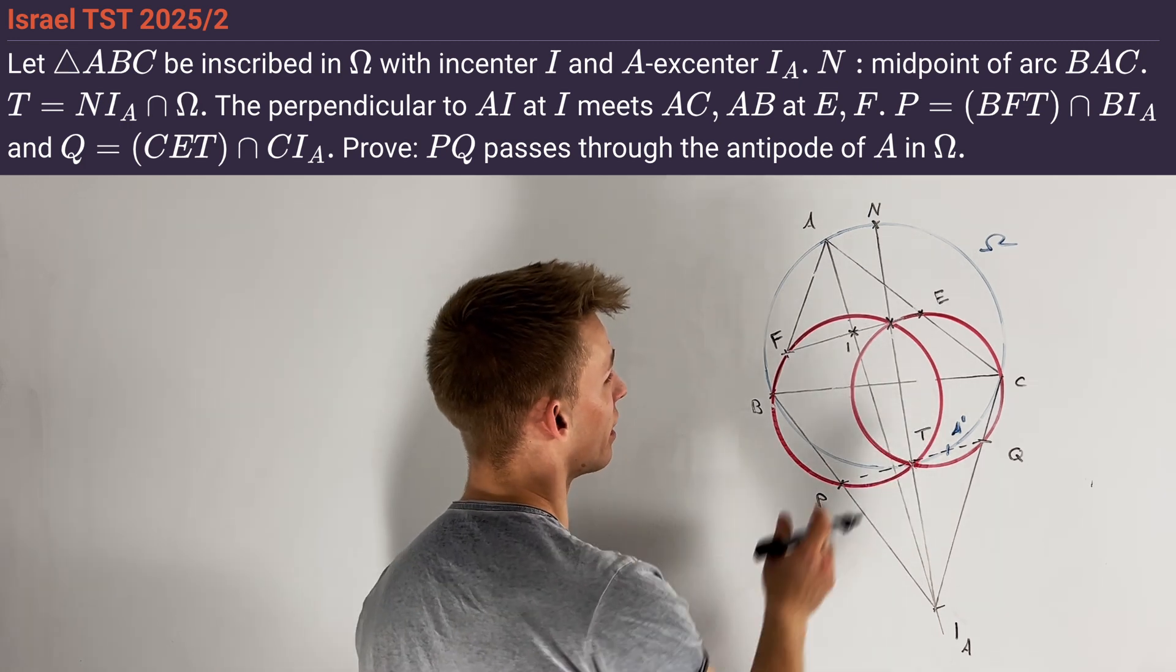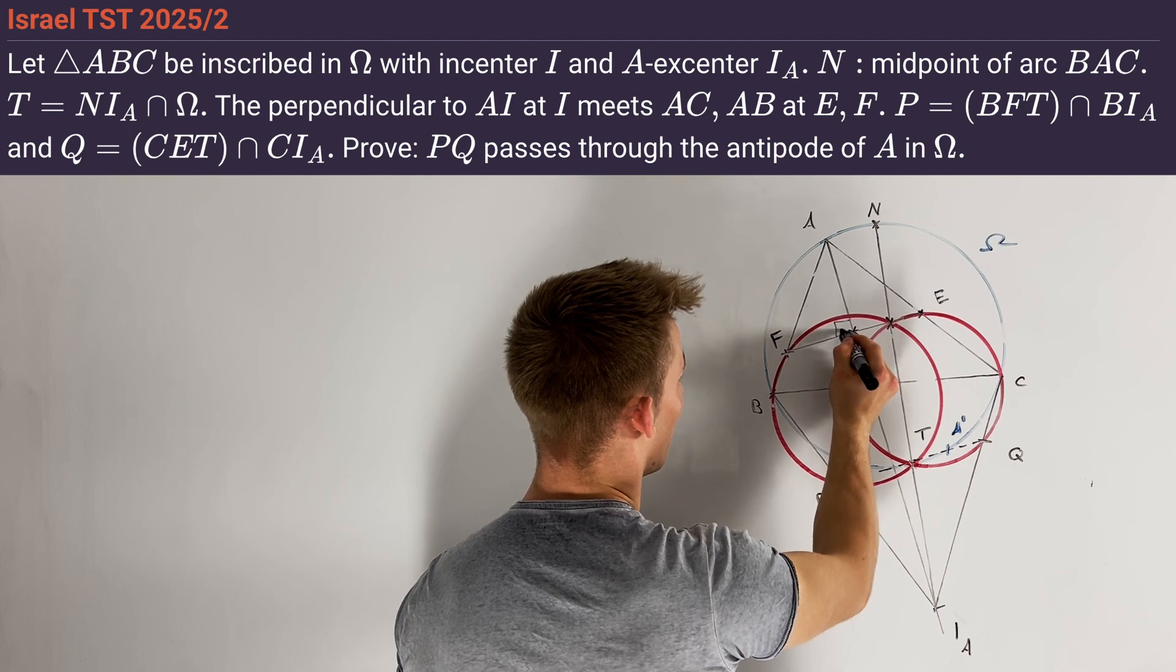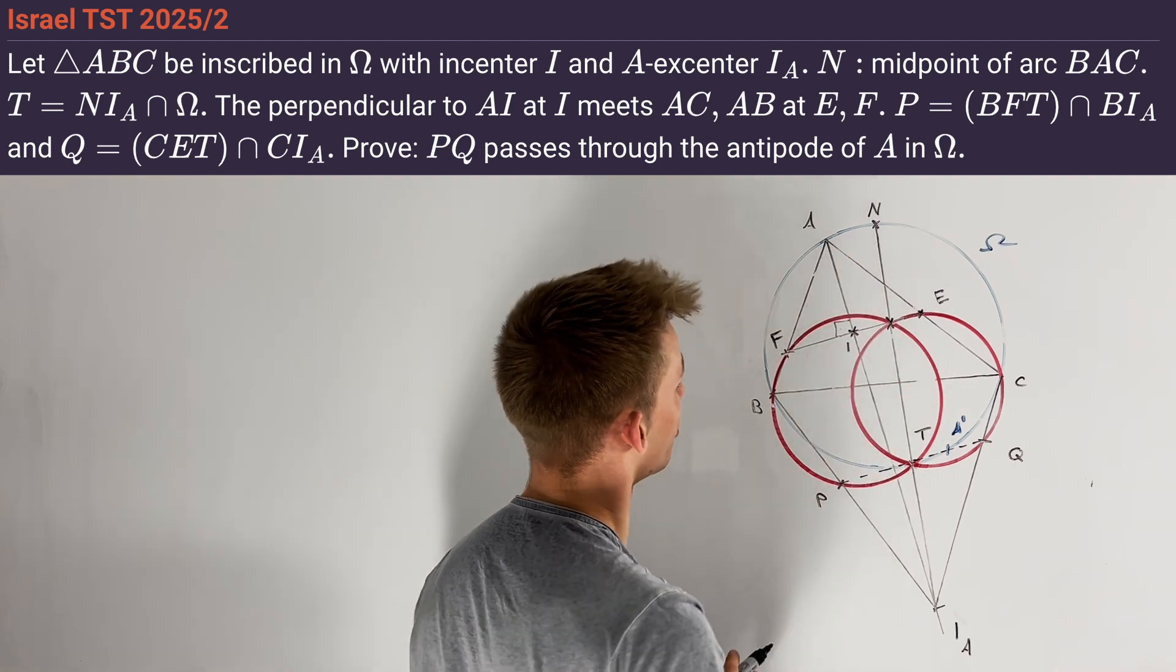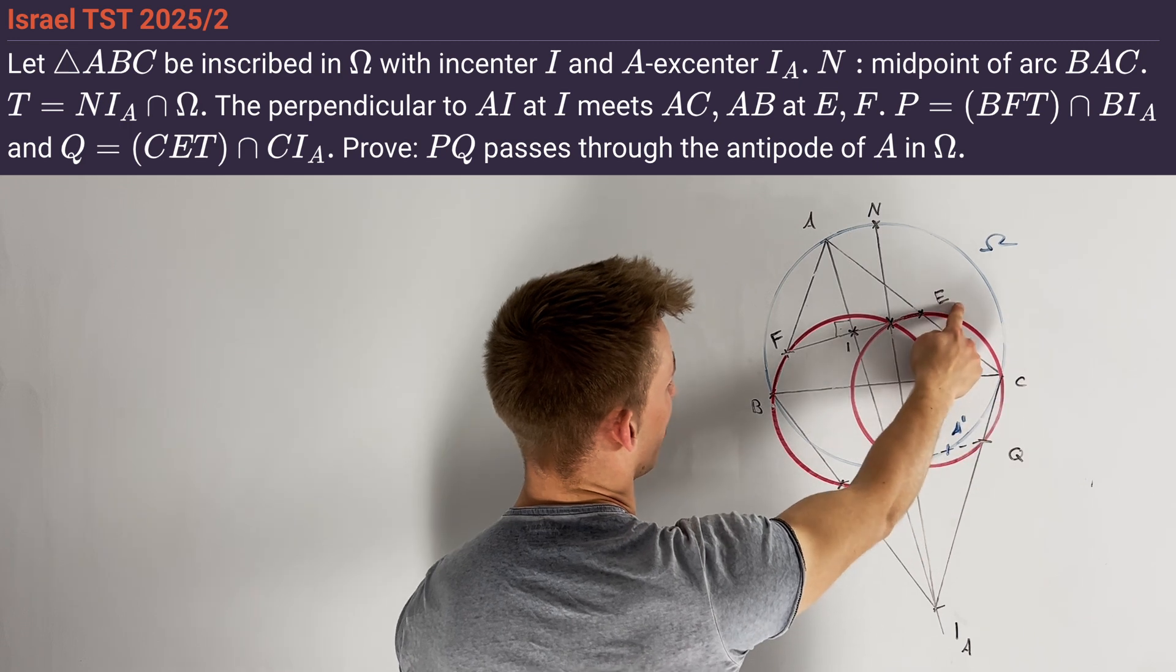Now we define a line through the in-center I which is perpendicular to the line AI, and this line should intersect AB at point F and AC at point E.